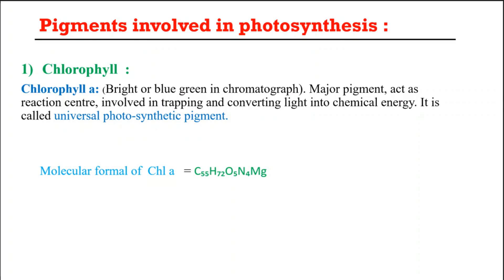Now let us see about the chlorophyll A molecule. Chlorophyll A is a blue-green color and this is a major pigment which is present in the reaction center — meaning your photosystem one and photosystem two. The main work of chlorophyll A is to trap sunlight energy so that it can be further converted into chemical energy. Chlorophyll A is a universal photosynthetic pigment, meaning it is present in all types of plants.